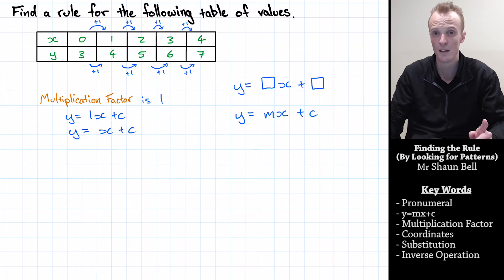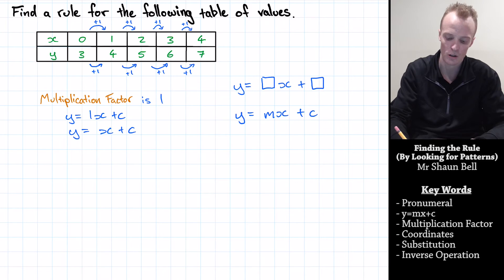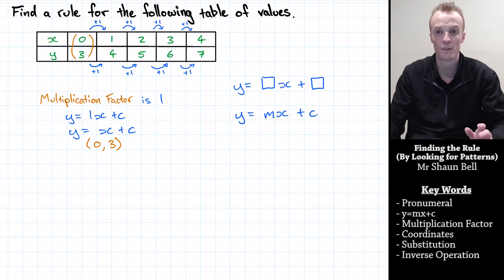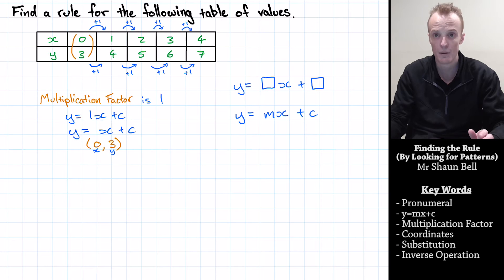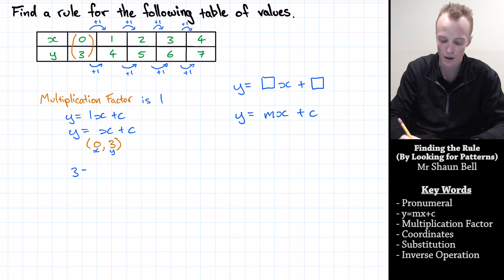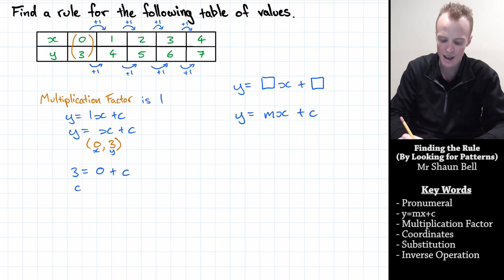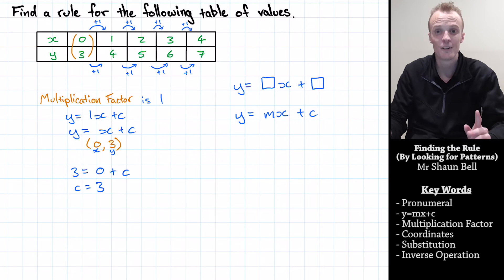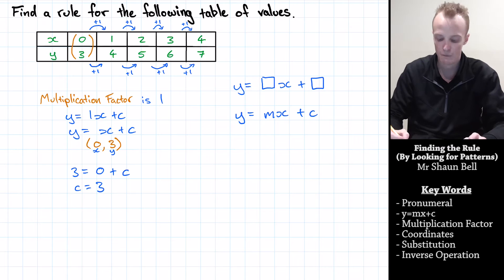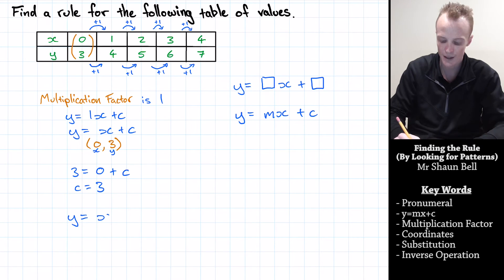But how do we find the c value? We just pick one of the coordinates from our table of values. I'm going to choose the coordinate (0, 3). What this coordinate represents is: when x is equal to 0, y is equal to 3. We substitute those values back into our formula — y equals 3 when x equals 0, plus c. For this to be true, c must equal 3. So our rule is y equals x plus 3.